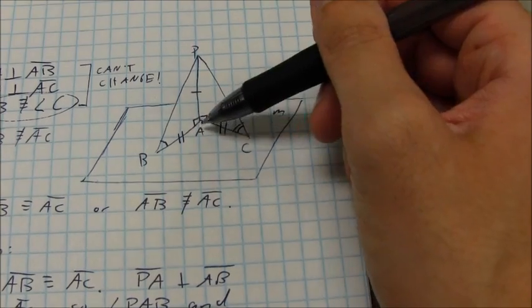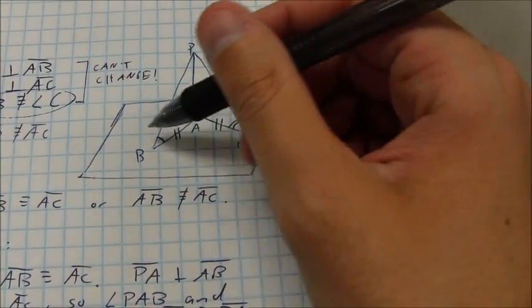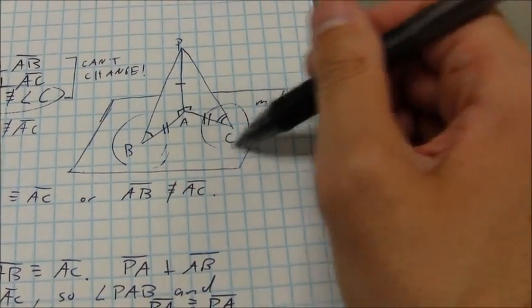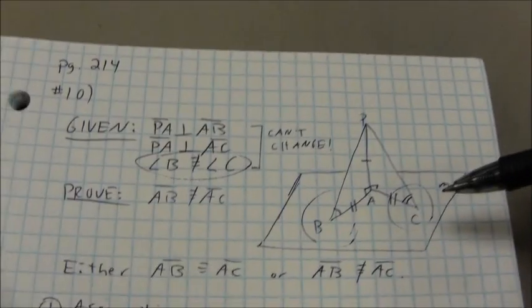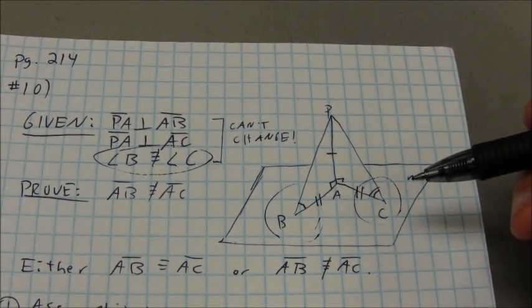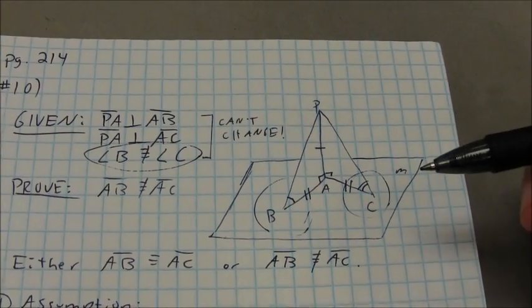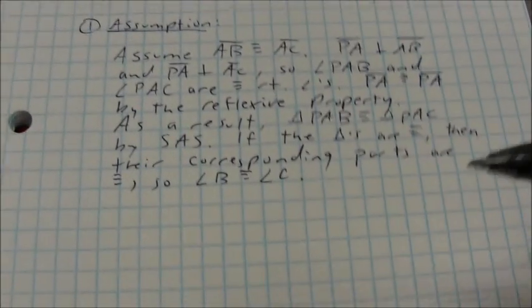those two triangles are congruent by side angle side, that forces these two angles to be congruent, which contradicts the given, which means my assumption that AB is congruent to AC can't be true because it causes something false to happen. So I basically say that this contradicts the given.